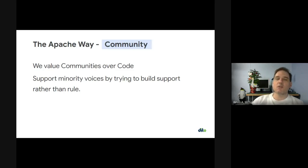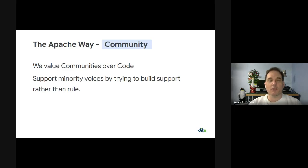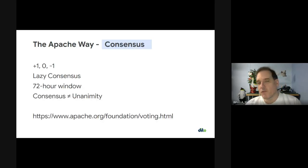Part of the process we do with communities is we try and make sure that minority voices are heard. We do that by building support and consensus rather than just rule. We don't look for people to take votes where one group outvotes another. We look to say: if we got 10 people versus 12 people who voted, we clearly don't have consensus. We need to figure out what's going on and talk through the issues until we hopefully reach 100% consensus.